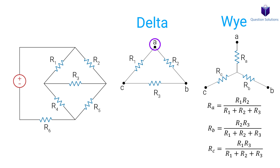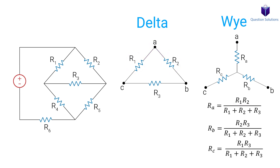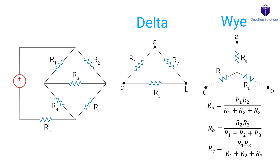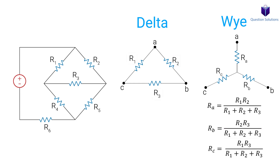Looking at point A on the delta, we can see that it's connected to R1 and R2. So those are going to be multiplied by each other on the top of our fraction. The bottom is just the addition of all the resistors. Let's look at the value for RB. We look to see the two resistors connected to point B. We see that it's R2 and R3, so that's going to be up top. The bottom is the same, just the addition of all the resistors. You probably already see that RC would be R1 and R3 multiplied and then divided by the addition of all the resistors.